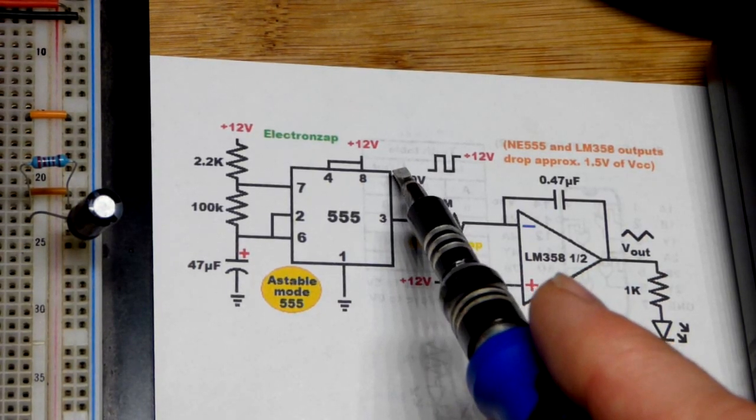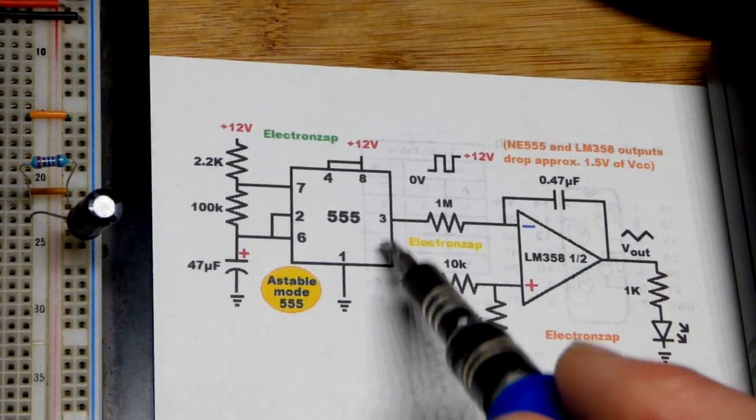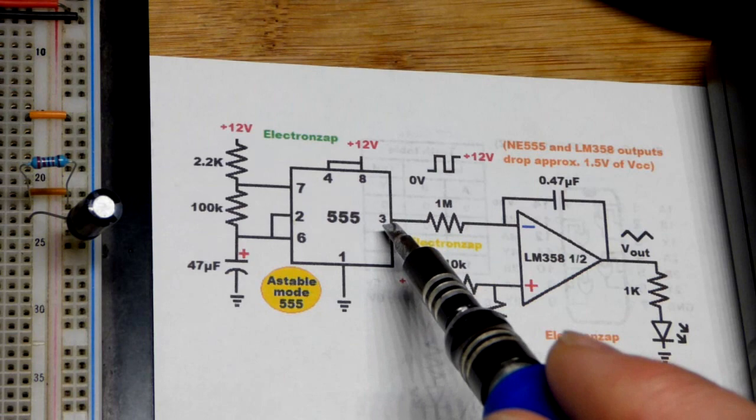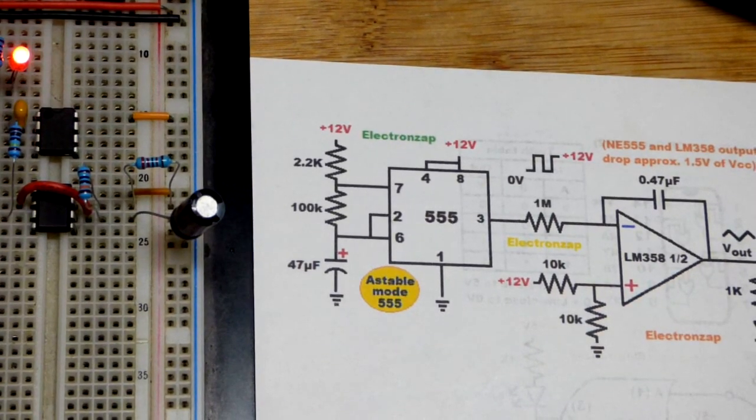High 555 timer output sets a lower output at the op amp, and then a low output of the 555 sets a higher voltage of the op amp. It's a ramp though.